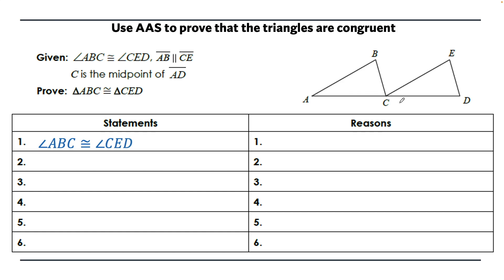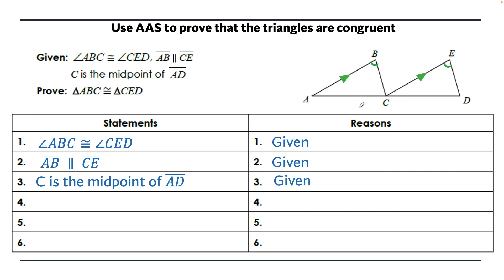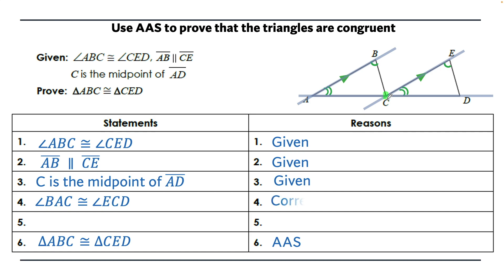Next proof: given angle ABC is congruent to angle CED, AB is parallel to CE, and CE is the midpoint of AD. We want to prove triangle ABC is congruent to triangle CED using angle-angle-side. The parallel lines cut by a transversal give us angle BAC congruent to angle ECD — corresponding angles. C being the midpoint tells us AC is congruent to CD. We've completed our proof with angle-angle-side.